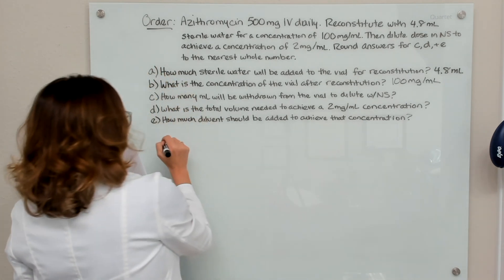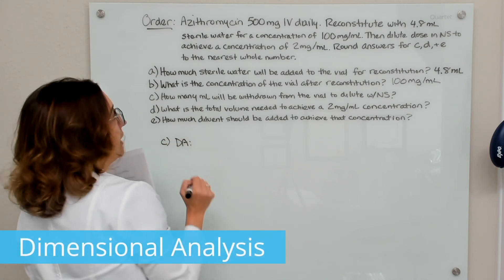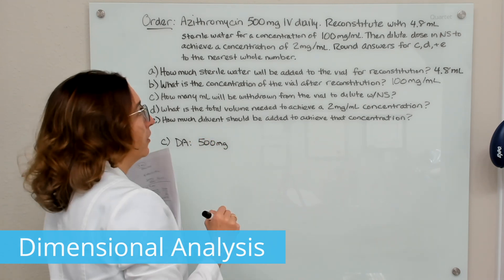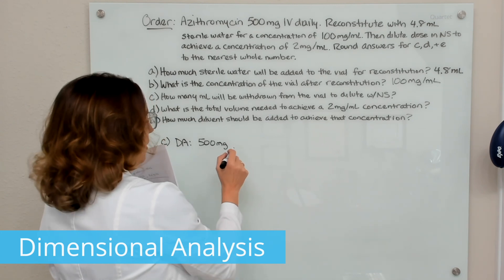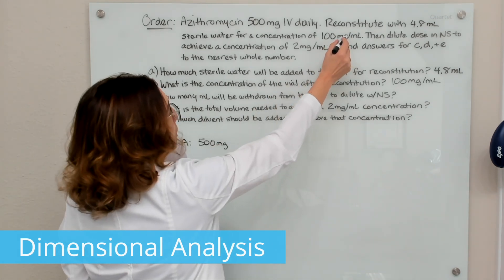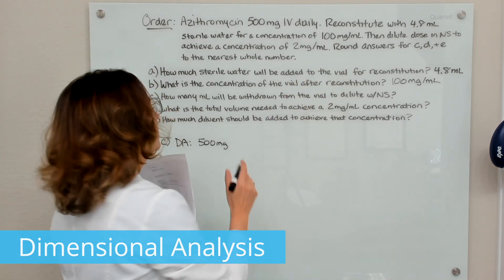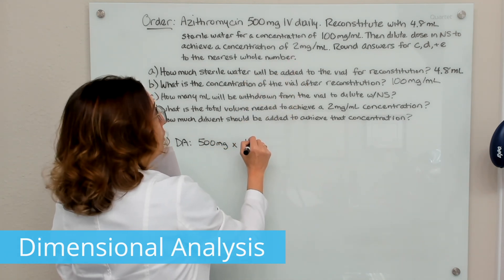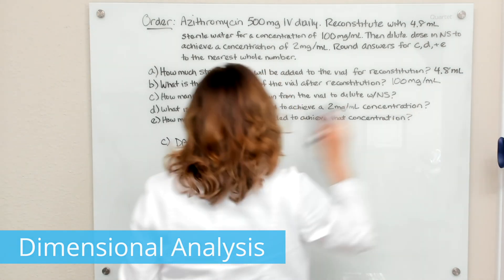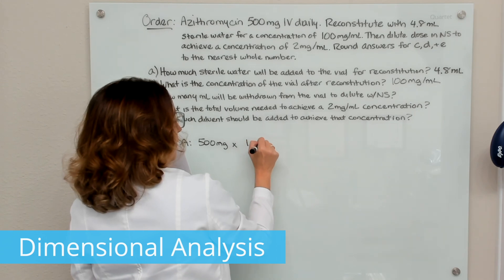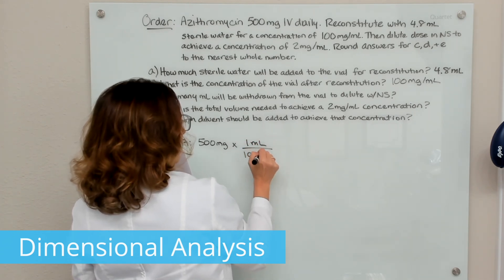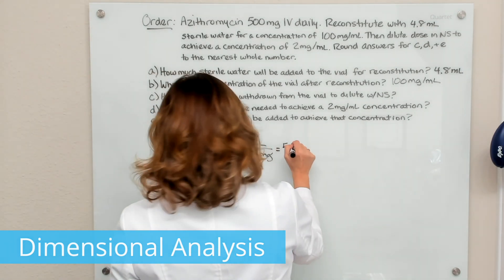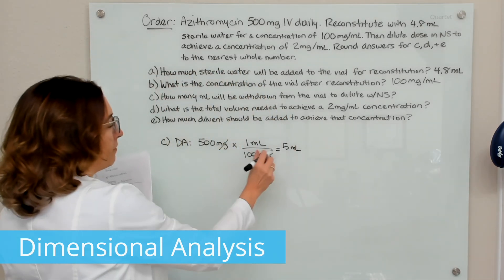So let's first do, so this is part C. Let's first solve this with dimensional analysis. So I'm going to start by writing down what is ordered, which is 500 milligrams. I'm going to make sure my units of measure match up between what's ordered and what's available, the available concentration. And they do, they're both in milligrams. So I'm going to take the ordered dose times the available concentration, which is 100. I'm going to make sure we put our milliliters on top here and our milligrams on bottom, because we want our milligrams to cross off and we want to be left with milliliters. So calculate this out and it is five milliliters. That's how much we need to pull out of the vial.